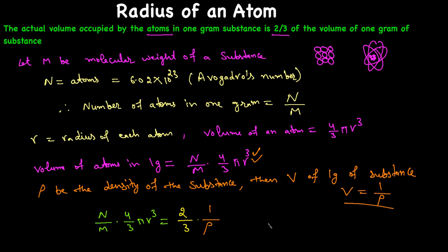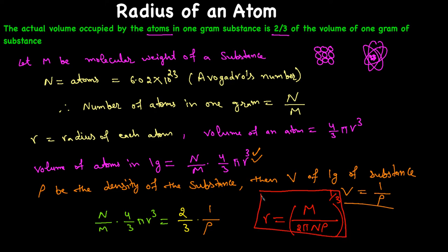Rearranging all factors and keeping R on one side gives us: R = (M / (2Nρ))^(1/3). This is the formula you can use to find the radius of any atom if you know the molecular weight and the density of that substance. Thanks for watching — please share with your friends and subscribe to the channel so you won't miss any other videos. Have a good day!